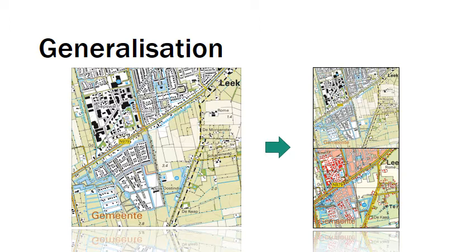In this example the individual houses are substituted for built-up area. Also the width of the roads are exaggerated to improve legibility. Generalization uses operators like simplification, selection, exaggeration, typification and others to create a meaningful map at a smaller scale.